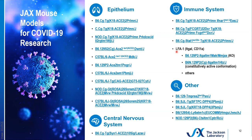I'd also like to point out our LFA1 models. Although these haven't been combined with the K18-ACE2 mutations, they might be interesting to take a look at in light of recent evidence that LFA1 might be an ACE2-independent entry pathway for the virus to enter T cells, which we'll touch on later. We have knockout and constitutively active conformation strains, as well as other strains in our repository that harbor mutations for LFA1.